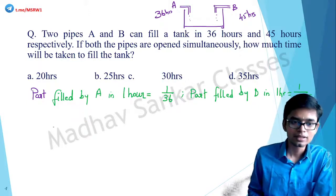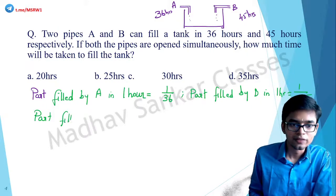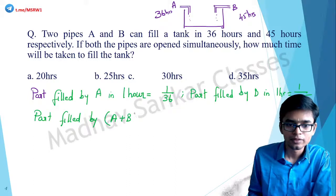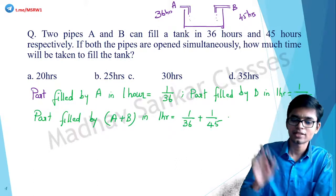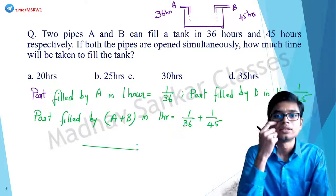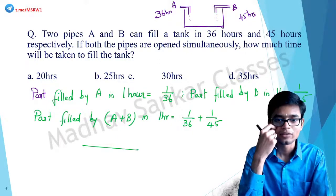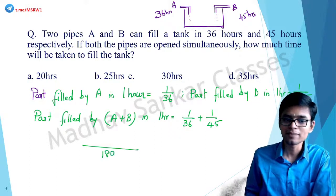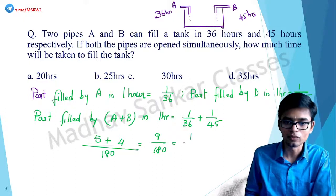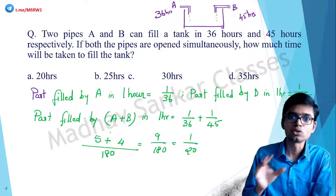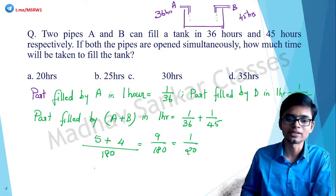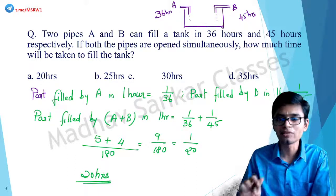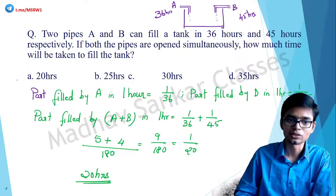Together, part filled by A and B in one hour is 1/36 + 1/45. The LCM of 36 and 45 is 180, giving 5/180 + 4/180 = 9/180 = 1/20. So the time to fill the tank is the reciprocal: 20 hours. The answer is option A.